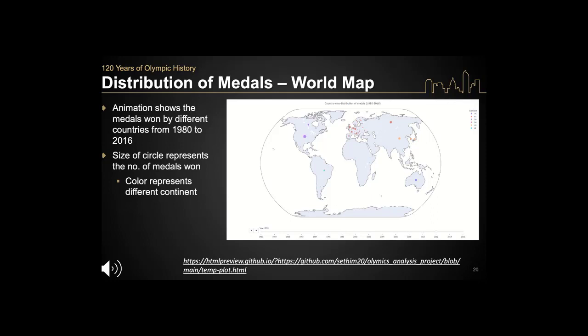To represent the distribution of medals across different countries over the years, we decided to create an animation utilizing Plotly and PyConvert. PyConvert helps get the latitude, longitude, and related items to plot this world map. I chose to have the data represented from 1980 to 2016. The size of the bubble represents the number of medals won — the bigger the size, the more medals. Different continents are represented by different colors. Most of the countries winning the most medals across the years have been limited to the U.S., some places in Europe, Australia, and so on.